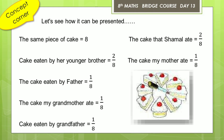The cake that mother ate is 1 upon 8 — that is, mother ate 1 part out of 8. In the same way, father also ate 1 part out of 8, therefore represented as 1 upon 8. The cake grandmother ate is equal to 1 upon 8, and cake eaten by grandfather is also 1 upon 8.